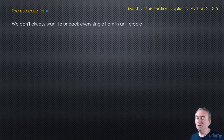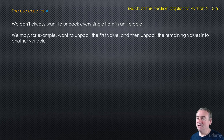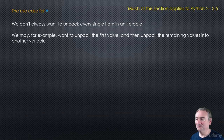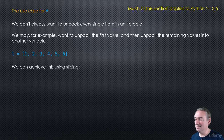We don't always want to unpack every single item in an iterable. We may, for example, want to unpack the first value and then unpack the remaining values into another variable — we want to stuff everything else into another single variable. Let's take a look at an example. Say we take this list: 1, 2, 3, 4, 5, 6.